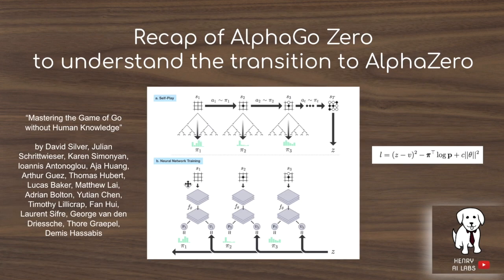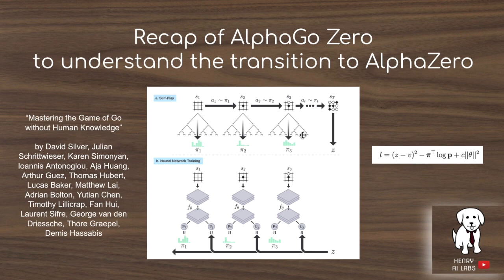As a quick recap, the idea of AlphaGoZero is to use the Monte Carlo tree search, which produces an action distribution pi, in order to improve the training of the policy network. It also uses the return from self-play to update the value. So you have one neural network in AlphaGoZero predicting both the value estimate from a current state and the policy — a distribution of actions given the state.